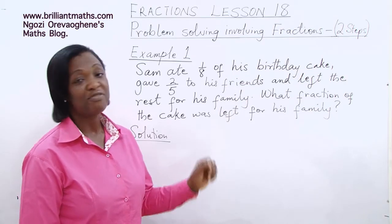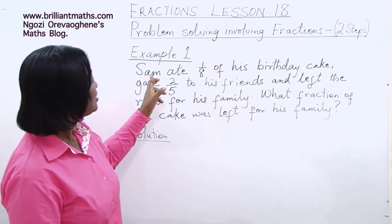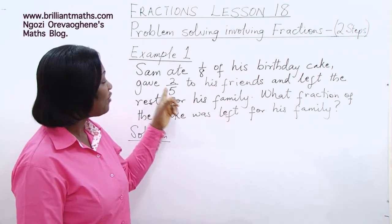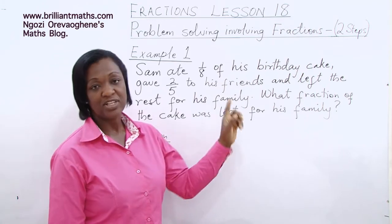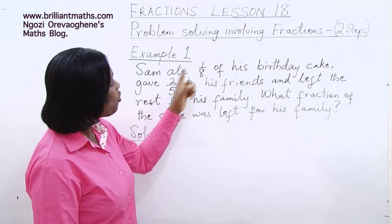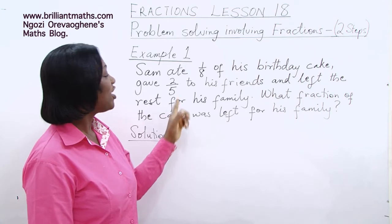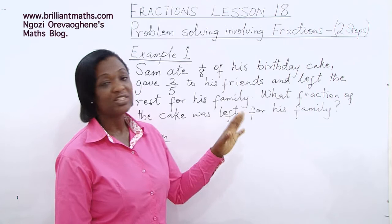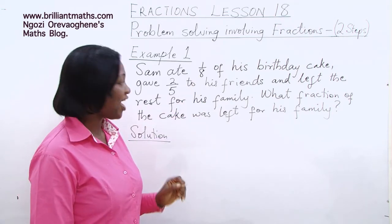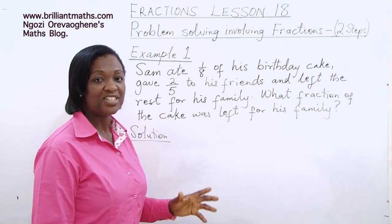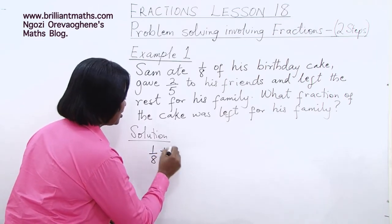Today we will be looking at problem solving involving fractions. Most of our questions will involve two steps before you arrive at the final answer. Example 1: Sam ate one-eighth of his birthday cake, gave two-fifths to his friends, and left the rest for his family. What fraction of the cake was left for his family? It involves two steps: first, Sam ate one-eighth; and then he gave two-fifths to his friends.